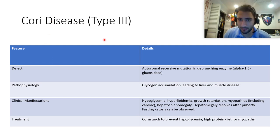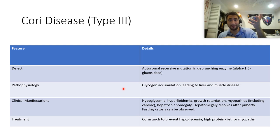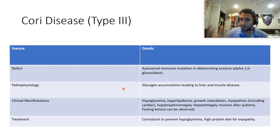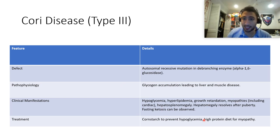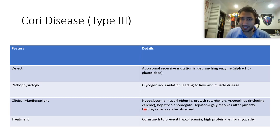This is Cori disease, type 3 glycogen storage disease — an autosomal recessive mutation in debranching enzyme. Without debranching enzyme, glycogen accumulates in the liver and muscle, causing hypoglycemia, hyperlipidemia, growth retardation, myopathies, and hepatosplenomegaly, with hepatomegaly resolving after puberty. Very different from Pompe disease where vacuoles are the issue; here it's primarily liver and muscle. Treatment: cornstarch to prevent hypoglycemia and high-protein diet to help with myopathy. Prognosis is not nearly as bad as Pompe disease.